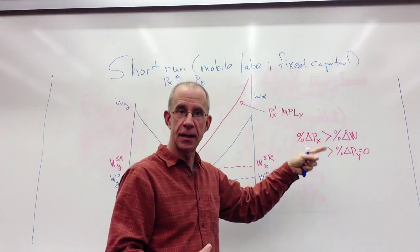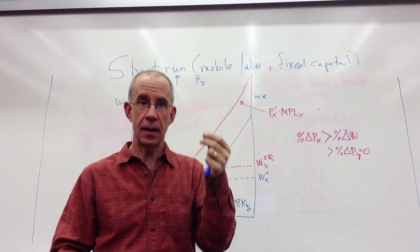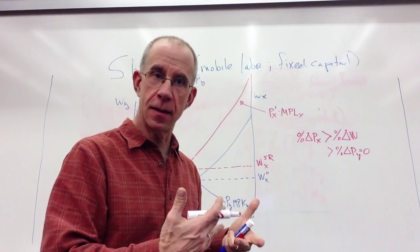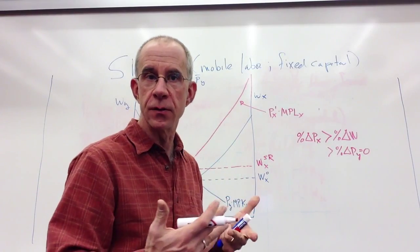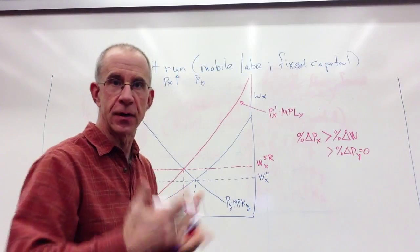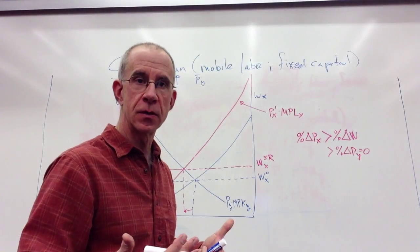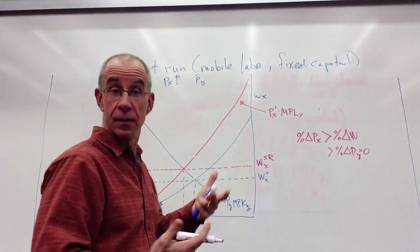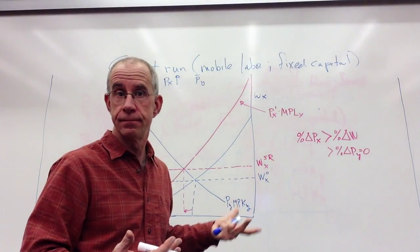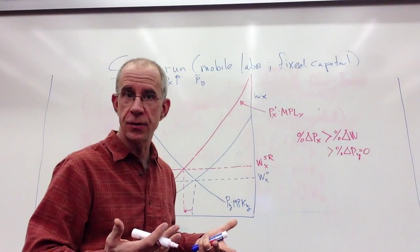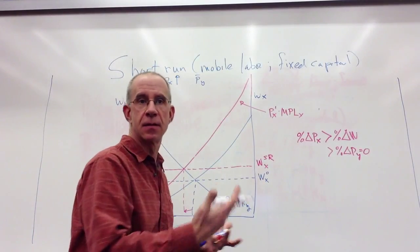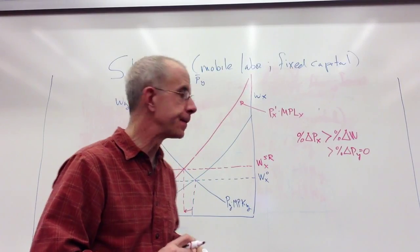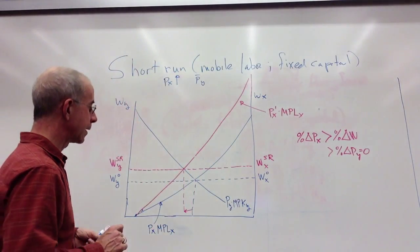Workers in the X sector can buy less X, but more Y. So their real income, their real returns to labor, the standard of living, their purchasing power, however you want to describe that, the impact is ambiguous, because it depends on whether they mainly consume Y or mainly consume X or some combination. The more they buy of X, the less likely they are to see an increase in their real income. It really does depend on their purchasing patterns.